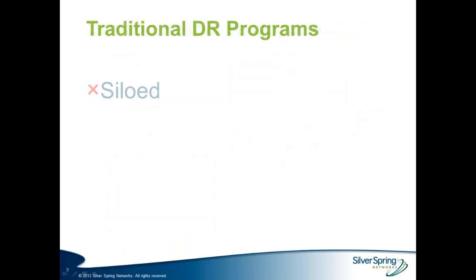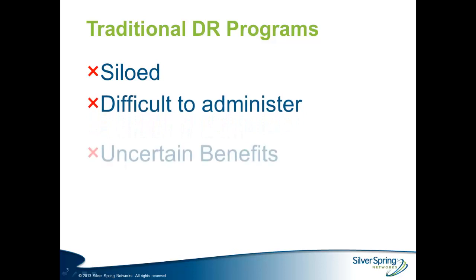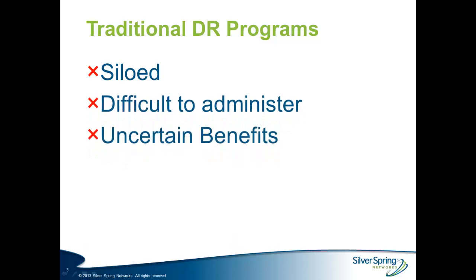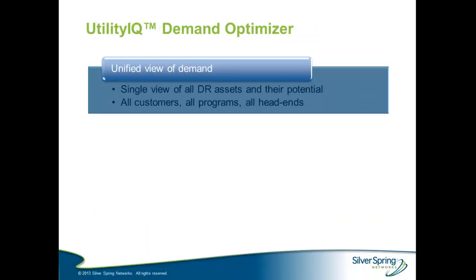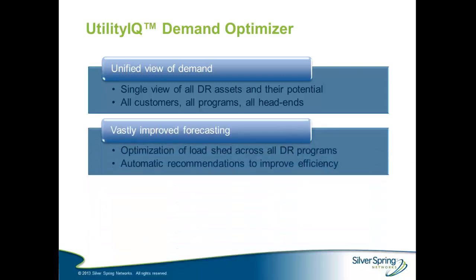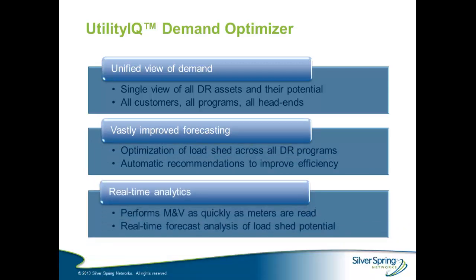Traditional DR solutions are siloed, highly manual to administer, and provide benefits that are difficult to predict or verify. Utility IQ Demand Optimizer offers a truly revolutionary solution to these challenges, integrating across your legacy DR platforms and programs, and providing vastly improved forecasting and near real-time measurement and verification of results. Let's look at these features in more detail.